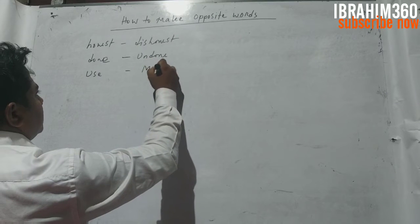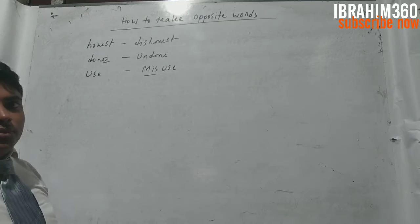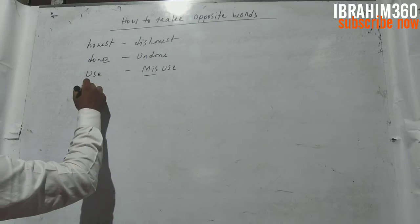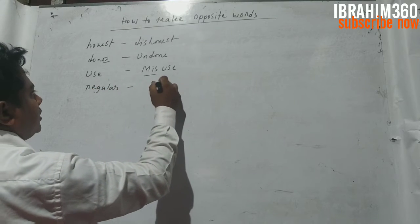Opposite word ki hobe? Misuse. Emni misbehave kore. Ami automatically shabda takke bipurit shabda kore pelam. Then emni babay jodhi regular shabda takke bala hai regular, ehto bipurit shabda ki hobe? Irregular.